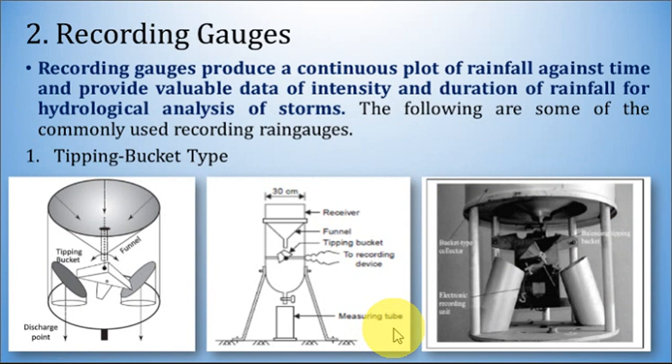Moving towards recording type rain gauges: recording gauges produce a continuous plot of rainfall against time and provide valuable data on intensity and duration of rainfall for hydrological analysis of storms. The following are some of the commonly used recording type rain gauges.